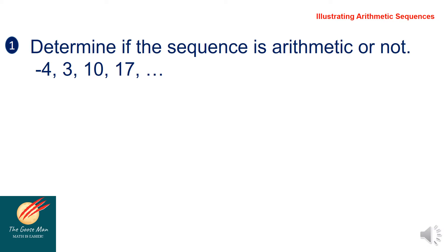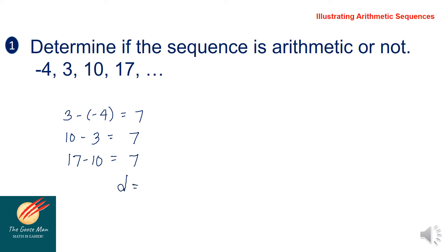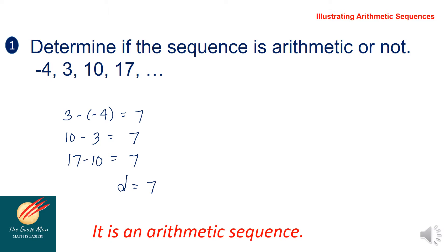Getting the difference between consecutive terms: 3 minus negative 4 equals 7. Similarly, 10 minus 3 equals 7, and 17 minus 10 equals 7. Since there is a common difference d equal to 7, we can say it is an arithmetic sequence.